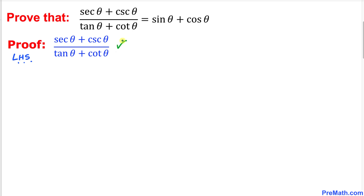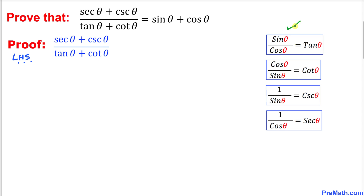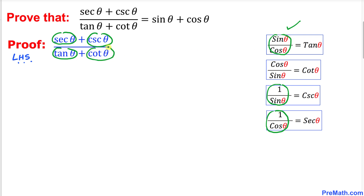Let's recall our trigonometric ratios table. We are going to replace secant theta by 1 over cosine theta, cosecant theta by 1 over sine theta, tangent theta by sine theta divided by cosine theta, and cotangent theta by cosine theta divided by sine theta.